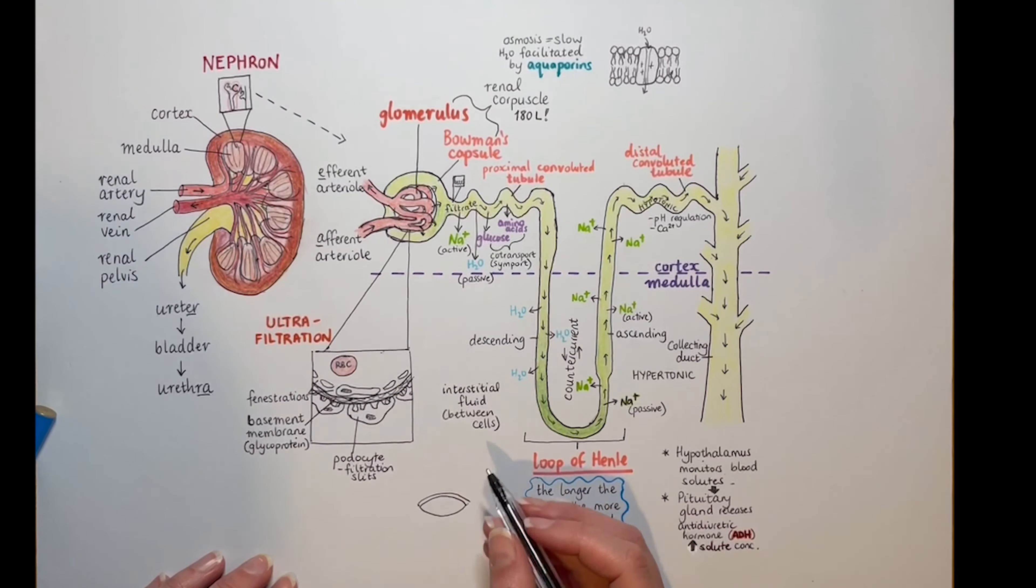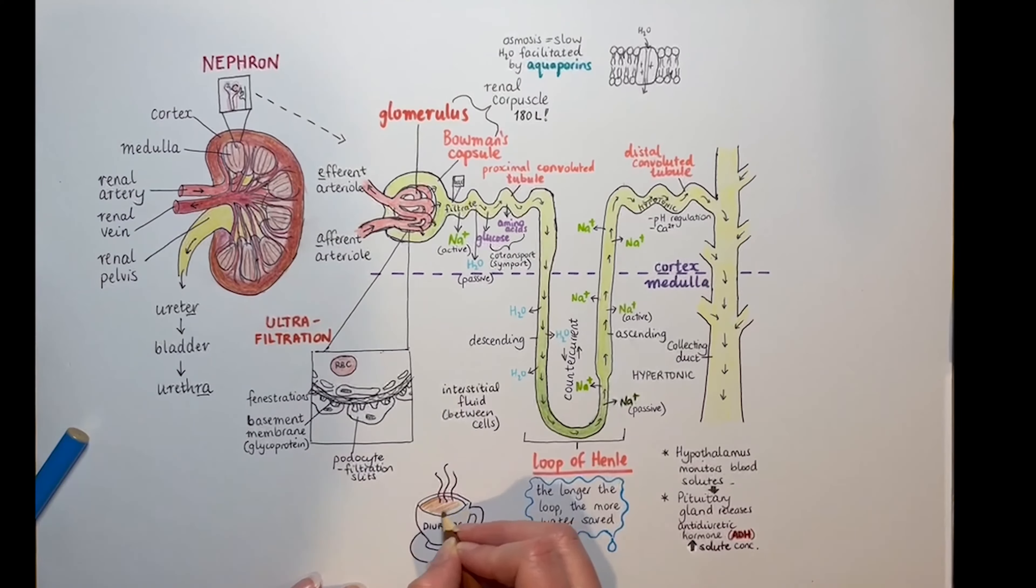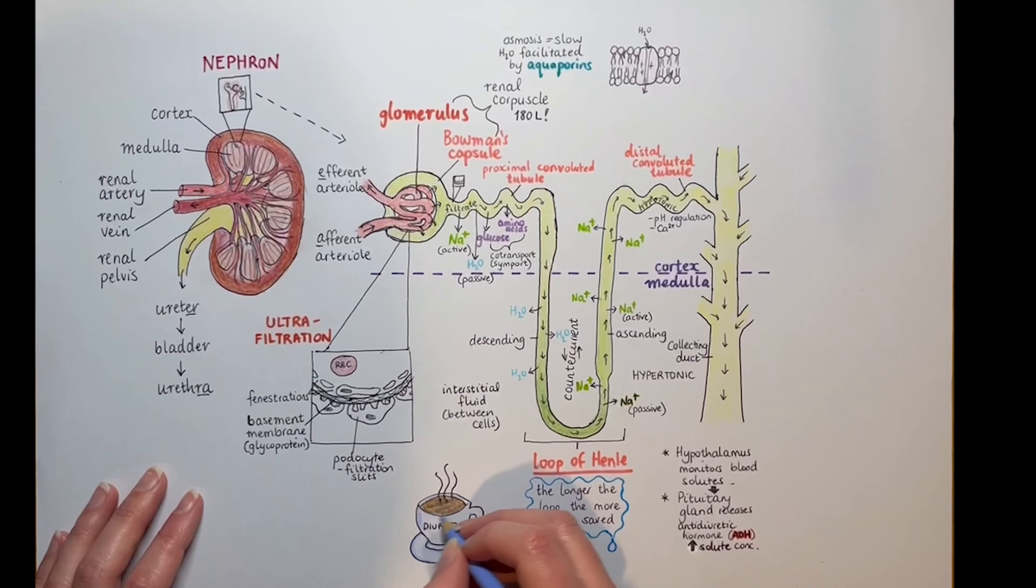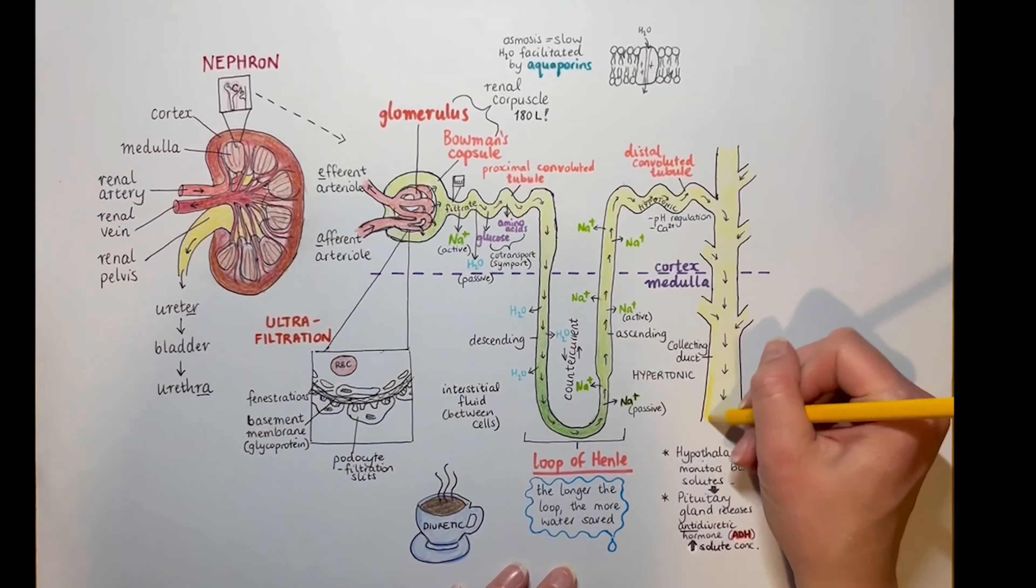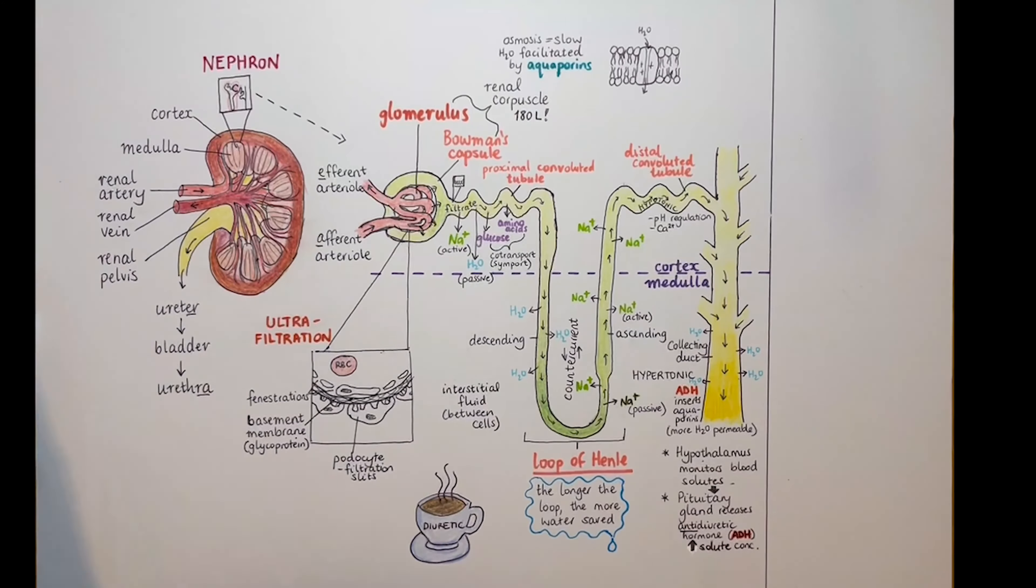And then water is going to follow that concentration gradient into the hypertonic medulla. If you can't remember which way around ADH works, or which one's diuretic, which one's an antidiuretic, may you remember that caffeine is a diuretic and that makes you wee more. So an antidiuretic does the opposite. So let's keep darkening up that wee in my picture.